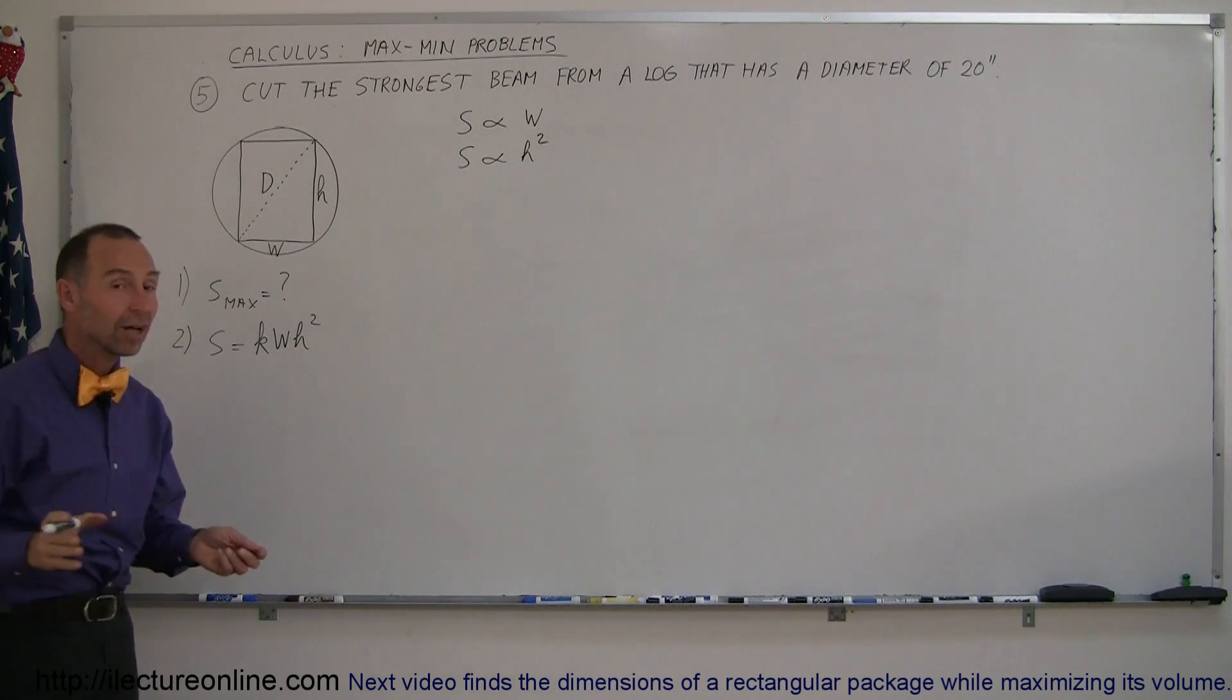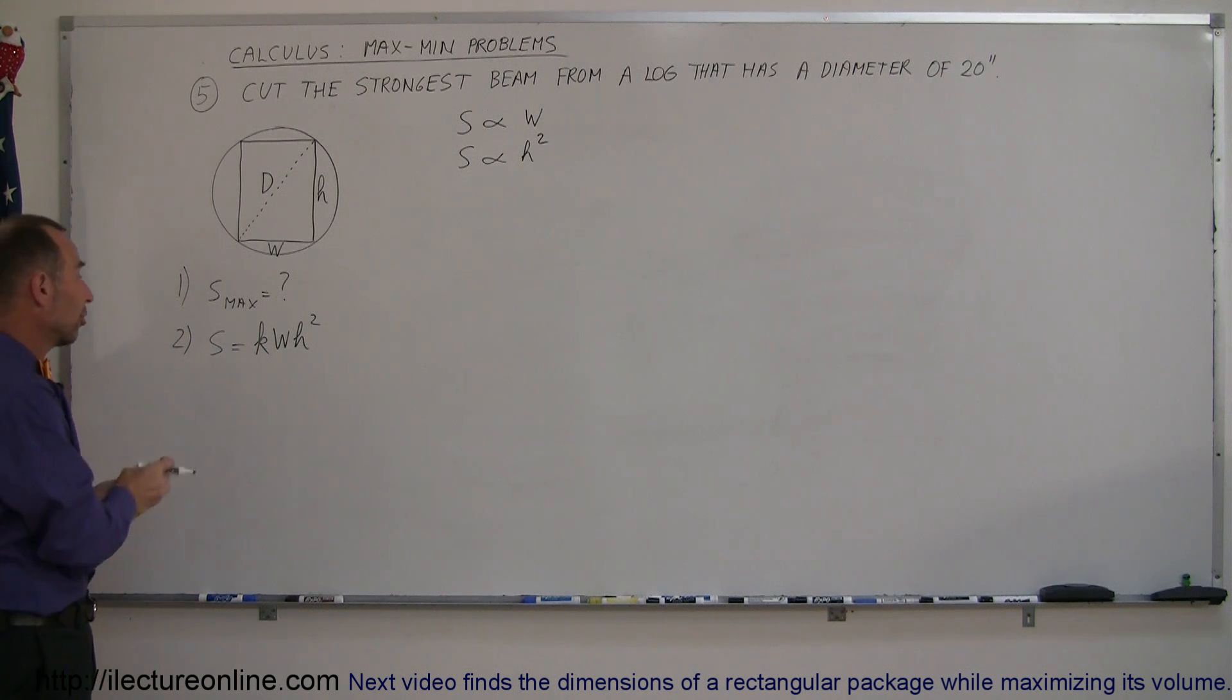So there's our equation. Constant k simply represents the strength of the material in this case, so if you cut it out of different kinds of wood or different kinds of logs, k can be different depending upon what wood you're using.